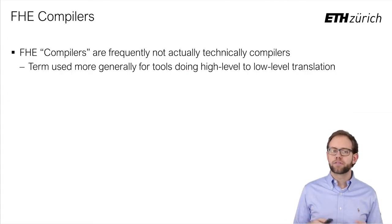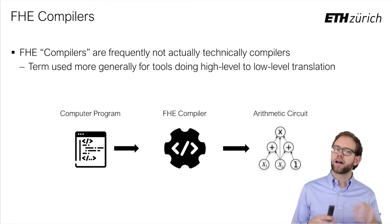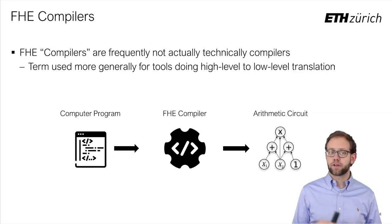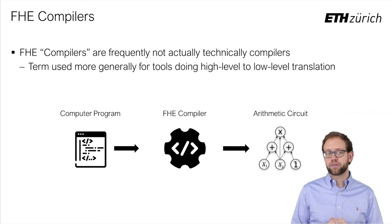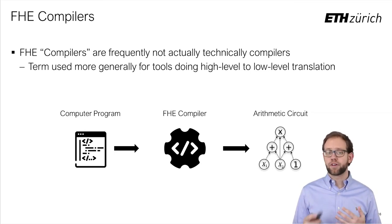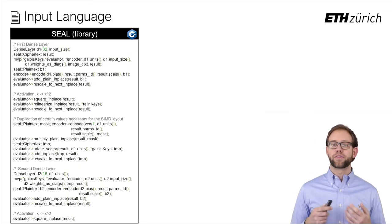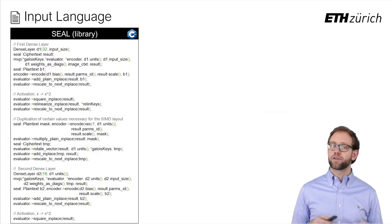The term compiler is used very loosely in FHE, since many are technically interpreters or libraries. However, they all follow the same pattern of taking a high-level program as input and producing, at least conceptually, an arithmetic circuit ready for FHE evaluation. Therefore, the first choice you have to make is which kind of input language to target — and here I don't mean things like C++ versus Java, but the level of abstraction you want to offer. For example, this is what writing a toy machine learning model looks like in SEAL, an FHE library by Microsoft.